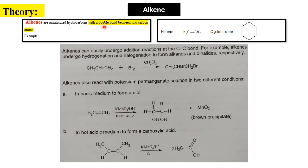Next is alkene. Alkenes are unsaturated hydrocarbons, meaning they contain a double bond between two carbon atoms. Whereas alkane has a single bond (saturated), alkene has a carbon-carbon double bond (unsaturated). Alkenes can easily undergo addition reactions — for example, hydrogenation or halogenation. Hydrogenation means hydrogen is added.